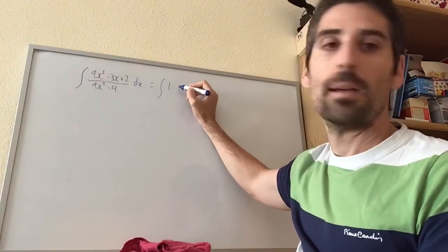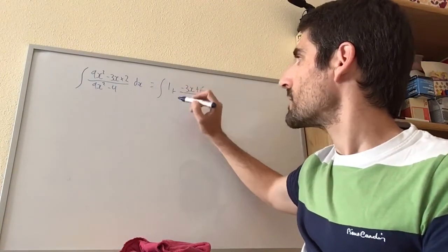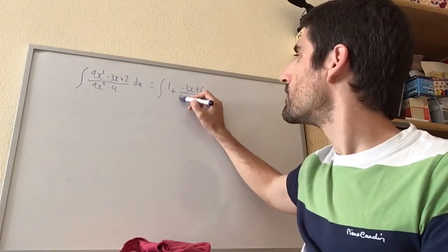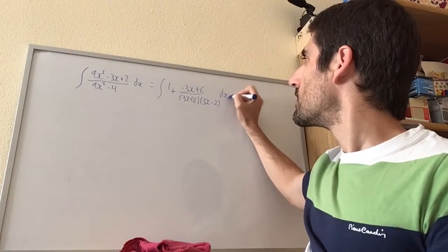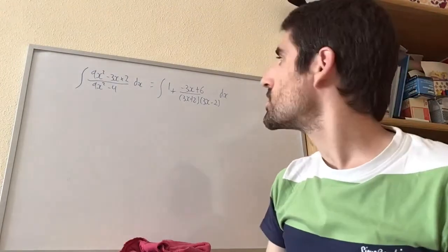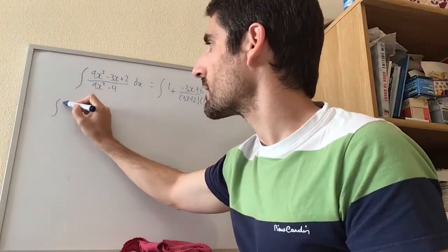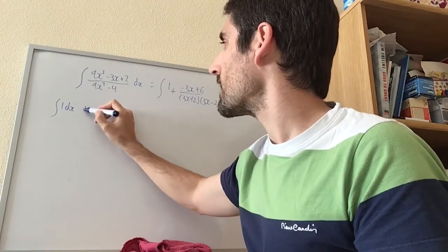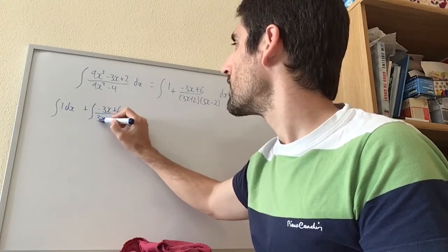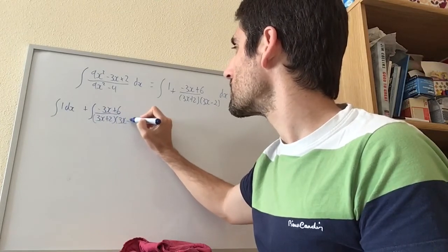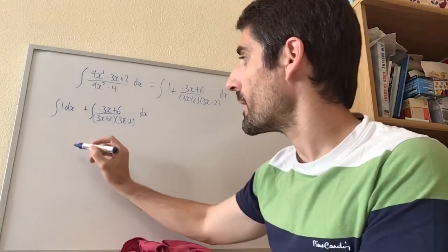After dividing, we get the integral of 1 plus (minus 3x plus 6) over (3x plus 2)(3x minus 2) dx. We can break that into the integral of 1 dx plus the integral of (minus 3x plus 6) over (3x plus 2)(3x minus 2) dx. Now we need to write that remainder in partial fractions.